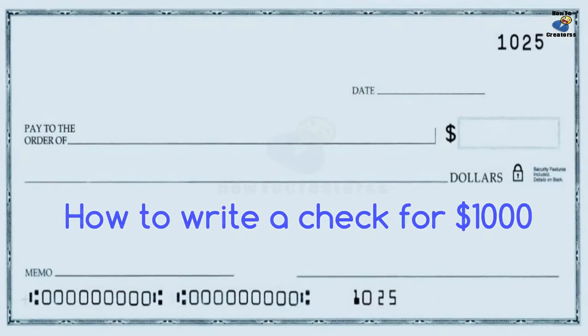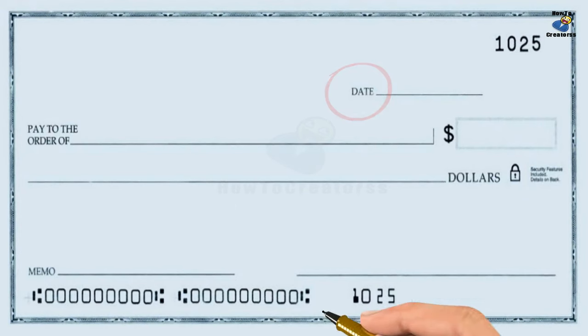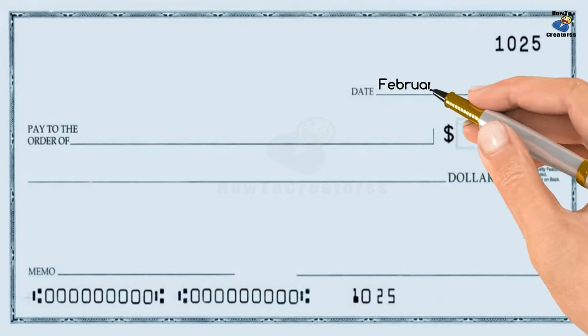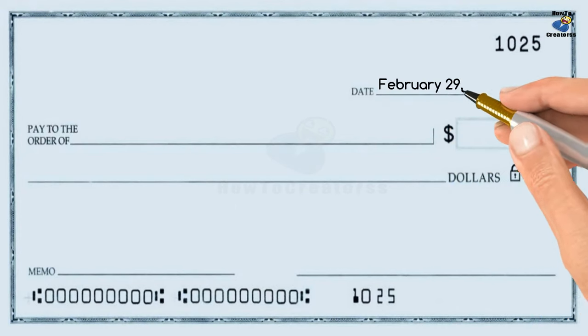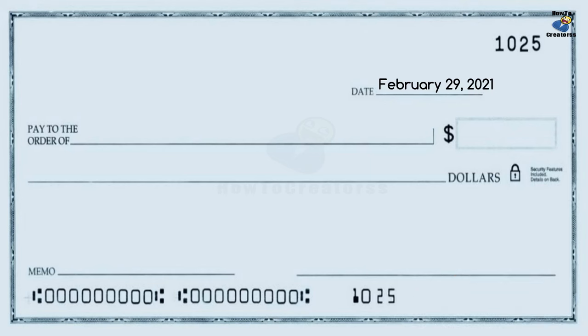Here's how to fill in the fields on a check for one thousand dollars. Date: write the current date, or the earliest date you would like the check to be cashed, in the upper right corner. The month, date, and year must be included.